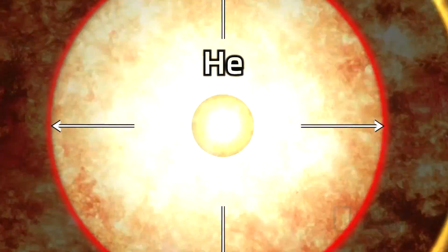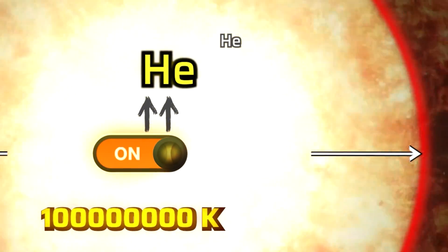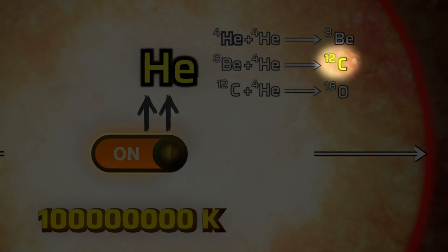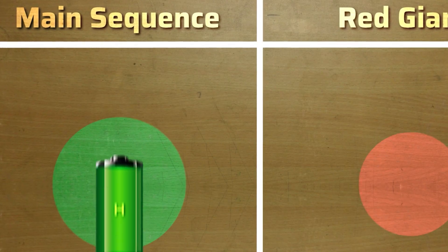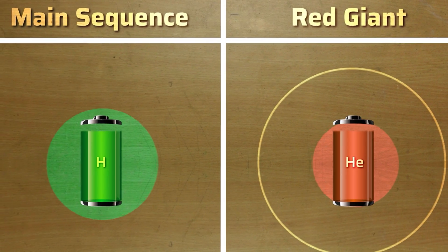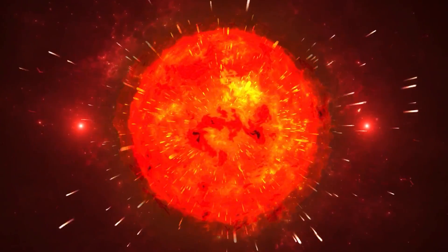But the sun is not done yet. Ultimately, hydrogen is going to run out and helium is going to contract, causing the outer layer to expand again. The sun will keep getting bigger and brighter, and in the end, it will be pumping out so much energy to balance gravity.